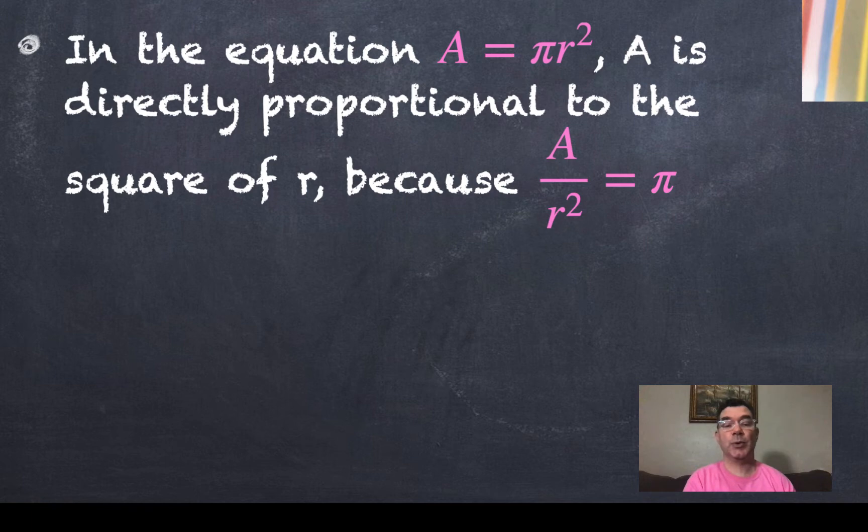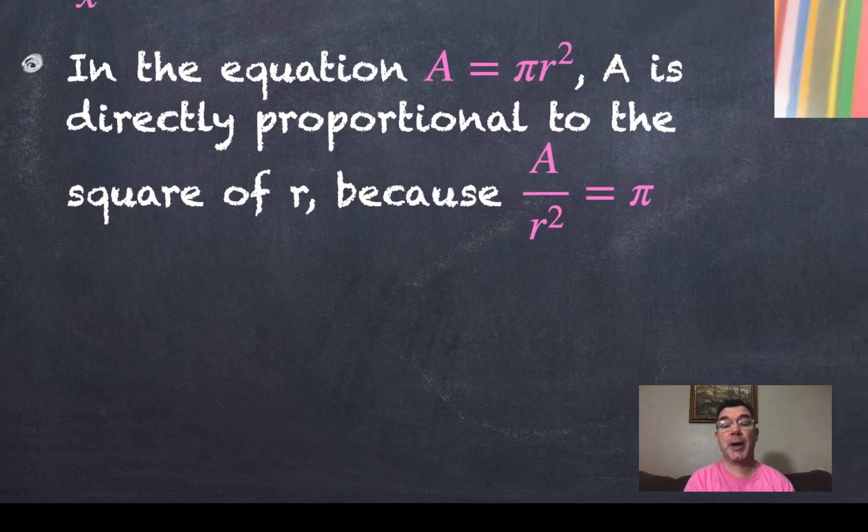So let's look at an example. We know that the area of a circle is pi times the radius squared, and since r has an exponent to it, then I can say that area is directly proportional to the square of the radius because area divided by the radius squared is always that constant pi.